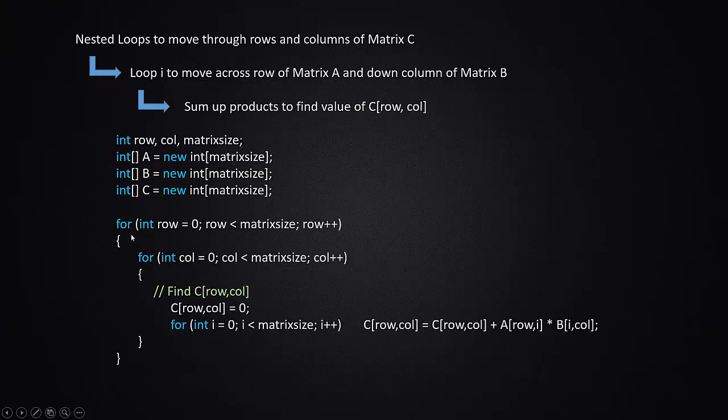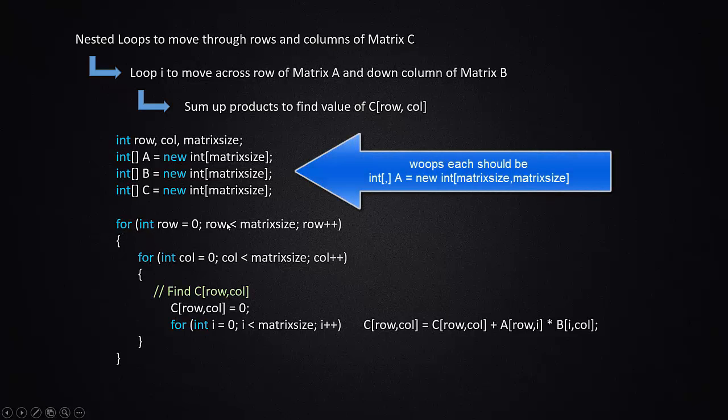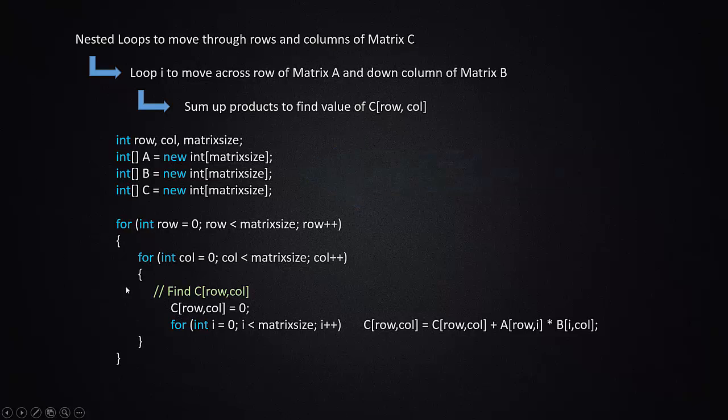In code, here we have it in C sharp code. Here is our outer loop to go through the rows. Here is our inner loop to go across the columns. That is the same thing we did in the earlier code. And here, under the part that says now find C comma row, we use the code from the previous page, which is these two lines: set the value equal to zero, and then sum the products as we move across the row and down the column. That is it. There is matrix multiplication in three or four lines of code.